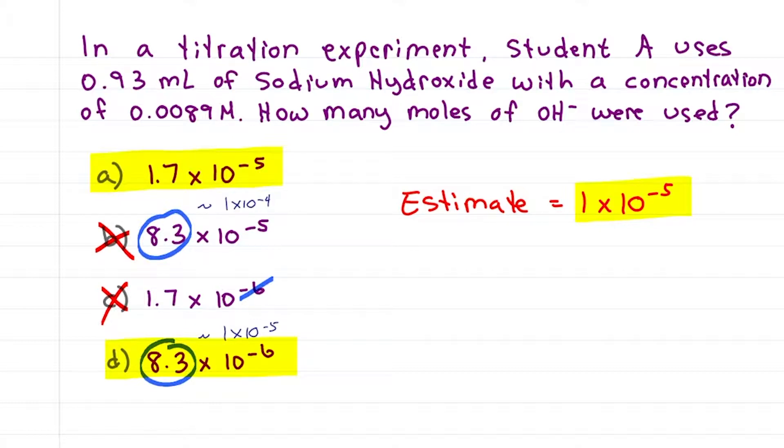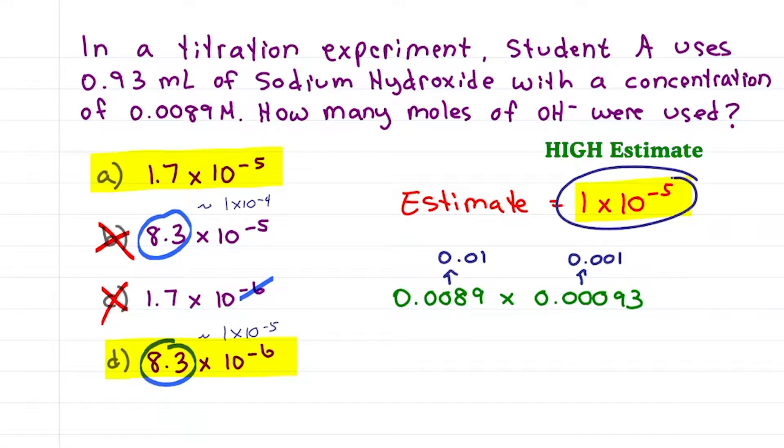Do we have to go solve it the long way? No, no, no. Take a look at how we got our answer. We rounded 0.0089 up to 0.01 and we rounded 0.0093 up to 0.001. Since we rounded up to get our estimated value, one times ten to the minus five is greater than the actual answer.